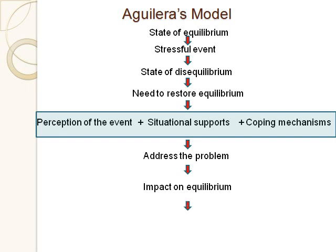In Aguilera's model, the resolution of the problem determines whether crisis is resolved or not. We can think about this model both for someone currently in crisis and for people at risk for crisis. If we intervene preventatively by addressing perception of the event, situational supports, and coping mechanisms, we might better equip people to address problems and move them more quickly toward restoring equilibrium before a full-blown crisis evolves. That's Aguilera's model in a nutshell — we'll spend a lot of time applying it to different situations.